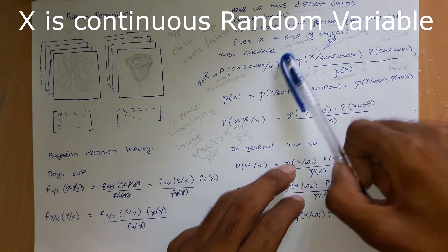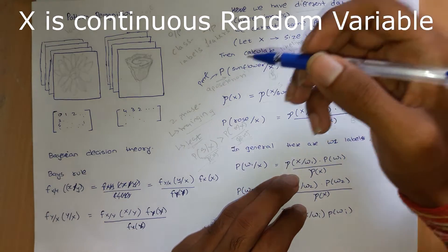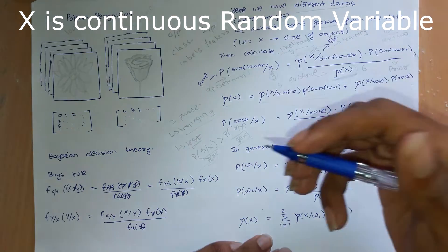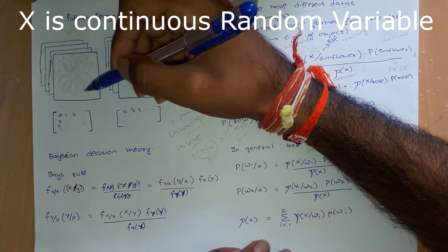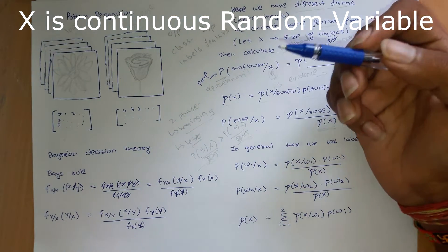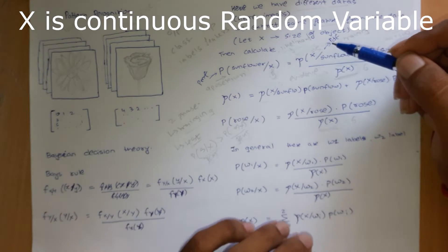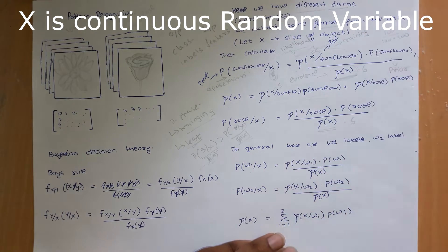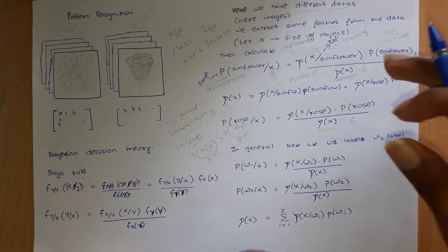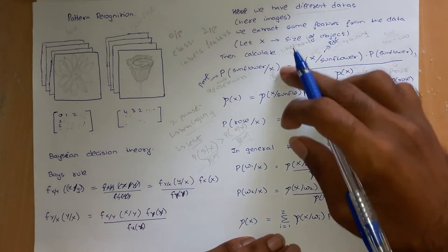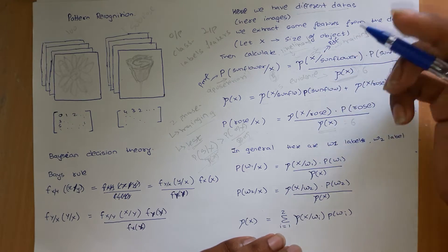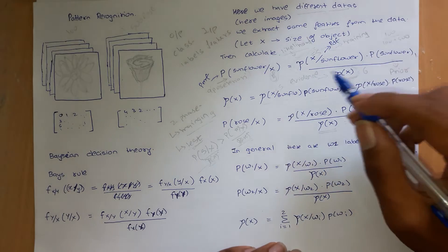We get this probability from the training data. We take the training data and see what X is for each sample, and we get a distribution of this function. There are many different methods — we can make some assumptions and so on, and we will see this in future videos. It is important that this is continuous — it is a PDF, a density function, not a discrete function.